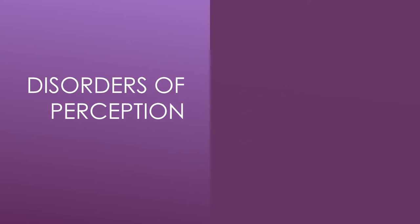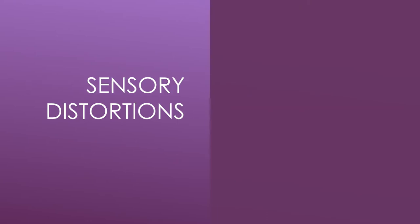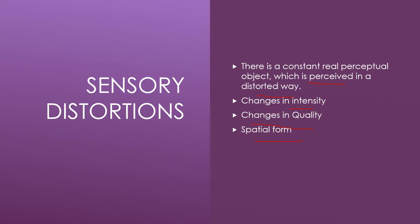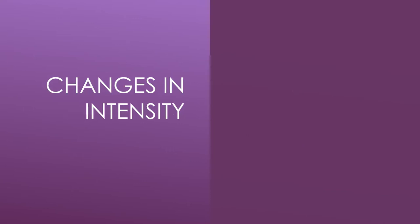What are the disorders of perception? Number one: sensory distortions, and number two: sensory deceptions. In this video we are going to focus on sensory distortions. There is a constant real perceptual object outside which is perceived in a distorted way. The different types of distortion can include changes in intensity, changes in quality, or changes in spatial form.